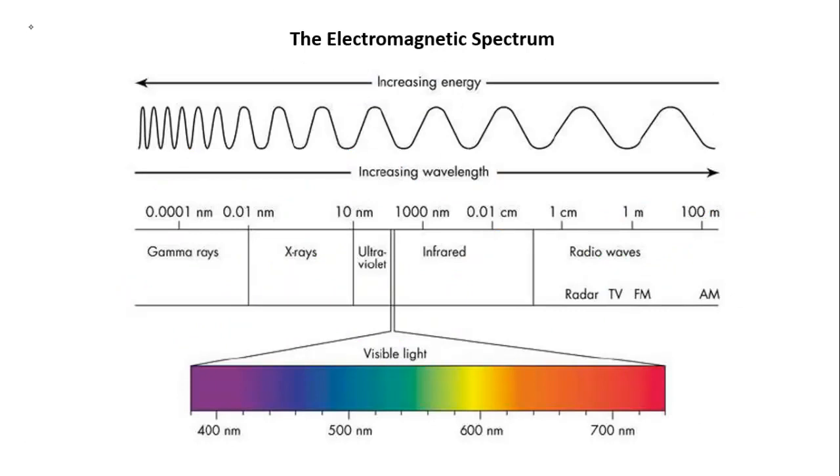Now in a sound wave, the wavelength determines pitch. Sound waves with different wavelengths will have different pitches. Short wavelengths give you a high-pitched sound. Long wavelengths give you a low-pitched sound. In a light wave, the wavelength instead determines color, or more generally, the kind of wave.